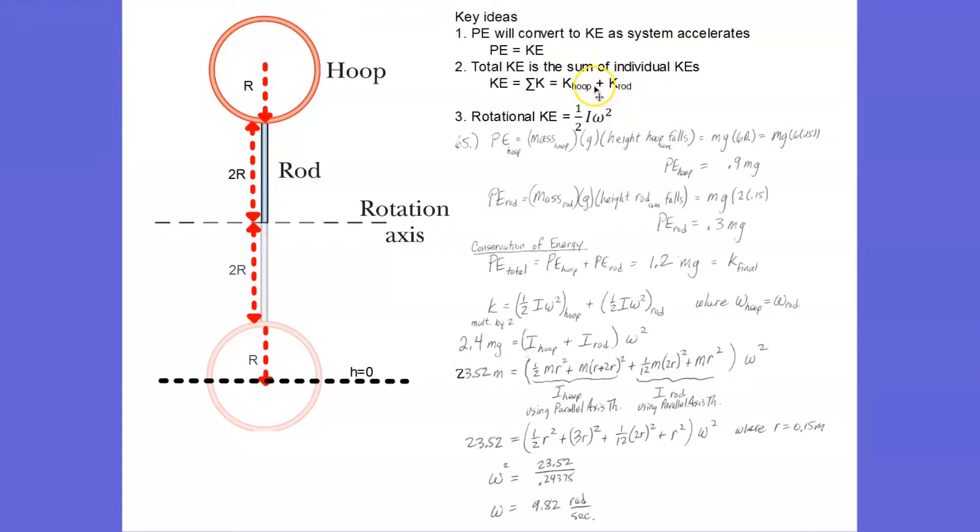We'll add their kinetic energies together to get our total kinetic energy. And then our total kinetic energy is equal to one-half I omega squared. We'll figure out what is the moment of inertia of this hoop-rod system, and then we'll solve that for omega to answer the question.